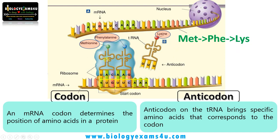Whereas the anticodon on the tRNA brings specific amino acids that correspond to each codon. The tRNA corresponding to AUG brings the methionine amino acid. For the second codon UUC, a tRNA with anticodon AAG carries phenylalanine. The same is the case with lysine. So the tRNA with an anticodon brings the specific amino acid that corresponds to the codon on the mRNA.